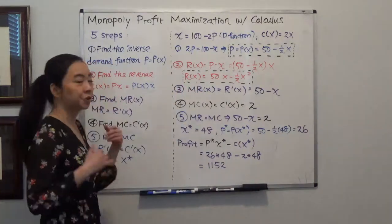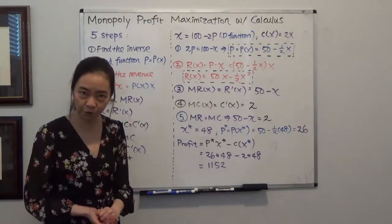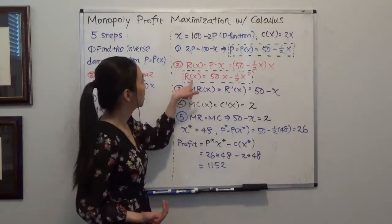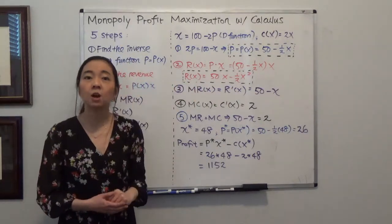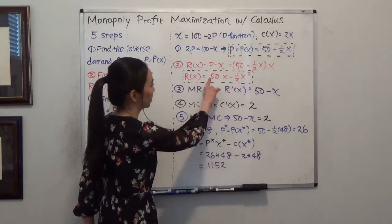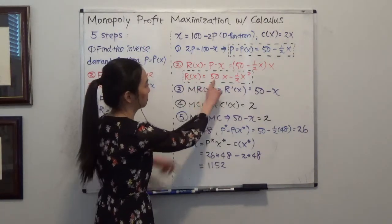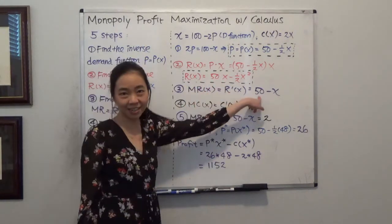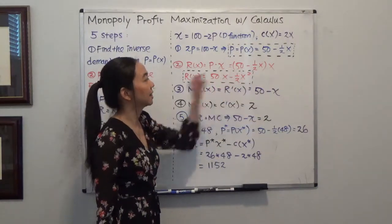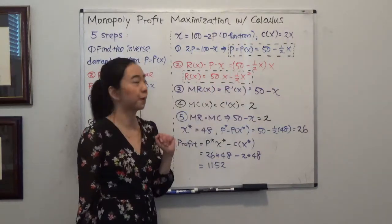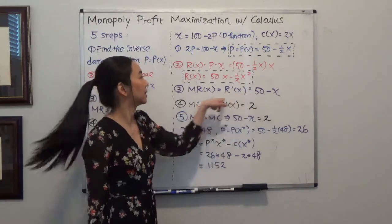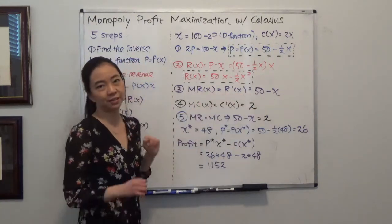The third step is to find the marginal revenue function by taking the derivative of the revenue function with respect to quantity. We take the derivative of 50x, which is 50, and minus one-half times x squared — using the power rule, that gives minus x. So the marginal revenue function is 50 minus x.